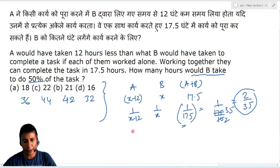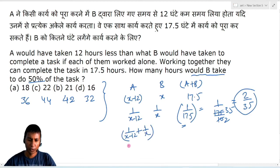Now, left hand side sum of efficiency is how much will it take? 1 by X minus 12 plus 1 upon X. Correct. Now, denominator you need 35. You need 35.